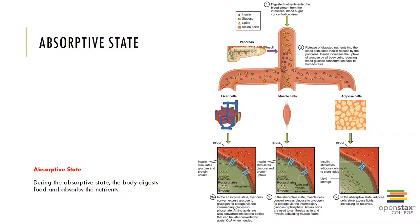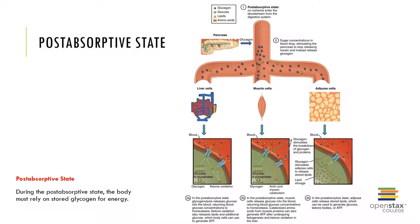During the absorptive state, the body digests foods and absorbs the nutrients as they have been enzymatically broken down through the alimentary canal into their constituent monomers and can then be transported across the cell membranes. During the post-absorptive state, the body must rely on stored glycogen for energy. The liver and skeletal muscles provide a source of glycogen or energy storage for the body.